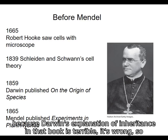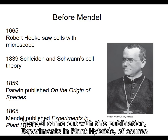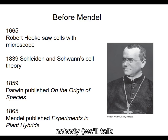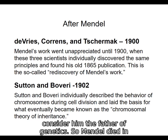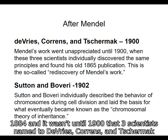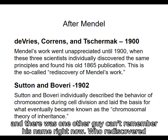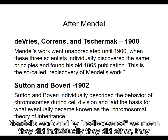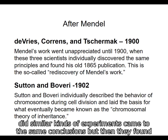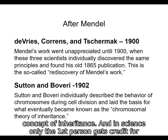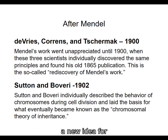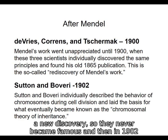Mendel published Experiments in Plant Hybrids, and of course we'll talk a lot about Mendel. Nobody appreciated it at the time, but now in hindsight we consider him the father of genetics. Mendel died in 1884, and it wasn't until 1900 that three scientists — De Vries, Correns, and Tschermak — rediscovered Mendel's work. They individually did similar experiments, came to the same conclusions, but then found Mendel's old publication in which he had already described this concept of inheritance. In science, only the first person gets credit for a discovery, so they never became famous. In 1902, Sutton and Boveri, working individually, explained what became known as the chromosomal theory of inheritance — the idea that genes are carried on chromosomes, chromosomes are passed from cell to cell during cell division, and therefore the chromosome is the basis of inheritance.